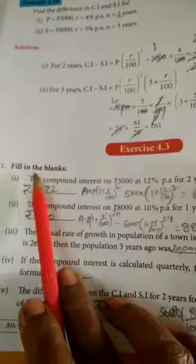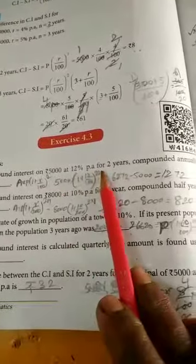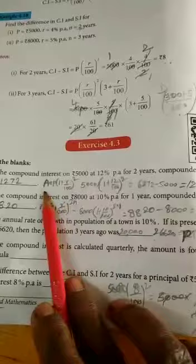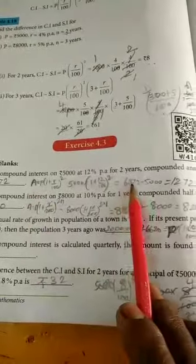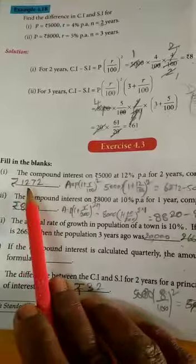Exercise 4.3, fill in the blanks. The compound interest on ₹5000 at 12% per annum for 2 years compounded annually is... So using this formula, you can simplify and subtract the principal amount. You get ₹1272.